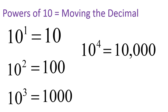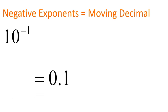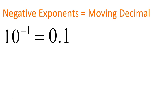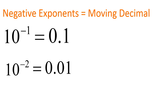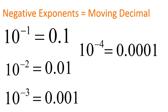Also, negative exponents move the decimal in the opposite direction. If you start at the number 1, you're moving the decimal one place to the left. For negative exponent of 2, you're moving it two places to the left. It's important to note that this only works with the number 10 — not all negative exponents move decimals, just when we're talking about powers of 10.